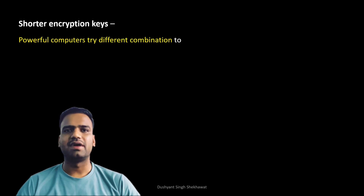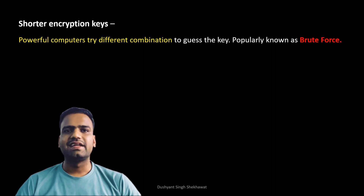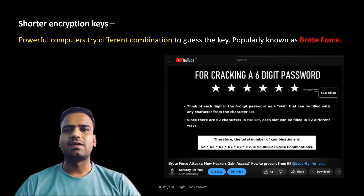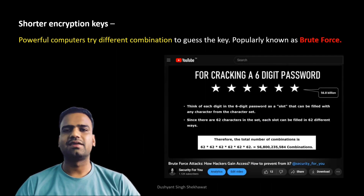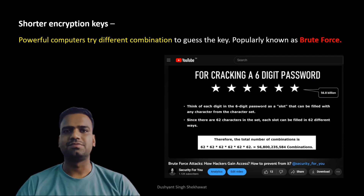When you use shorter encryption keys, it becomes easier for powerful computers to guess the right key by trying all possible combinations. This technique is called a brute force attack, and it can be done quickly if the key is too short. A separate video on brute force attacks is available in the description for more understanding.